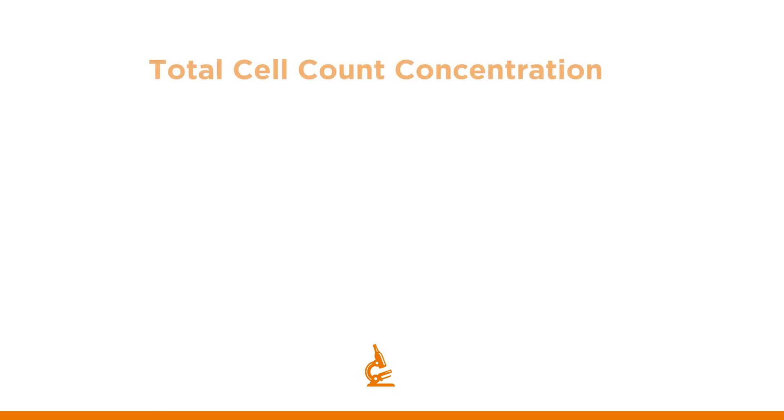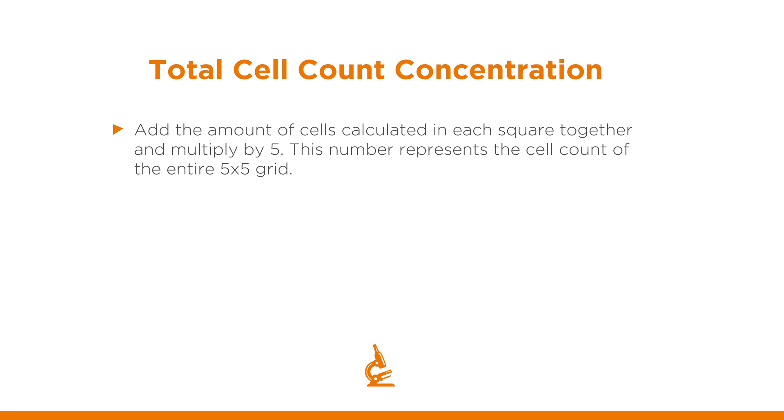Last, we need to perform a quick calculation to come up with our total cell concentration. Add the amount of cells calculated in each square together and multiply by 5. This number represents the cell count of the entire 5 by 5 grid.